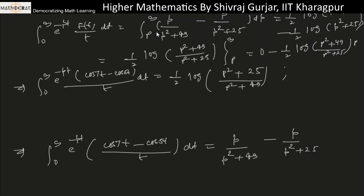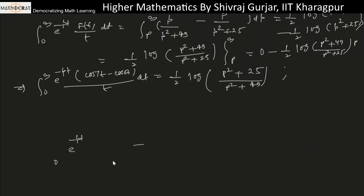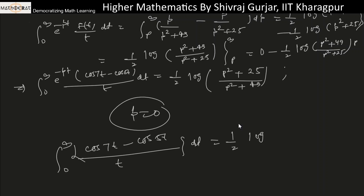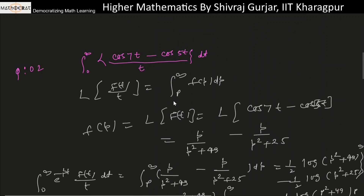We only need the part where p equals 0. So the integral from 0 to infinity of (cos7t - cos5t)/t dt equals one-half of log(25/49), which equals one-half of log(5/7)², which simplifies to log(5/7). So this is the answer — an interesting and easy approach using the Laplace transform.